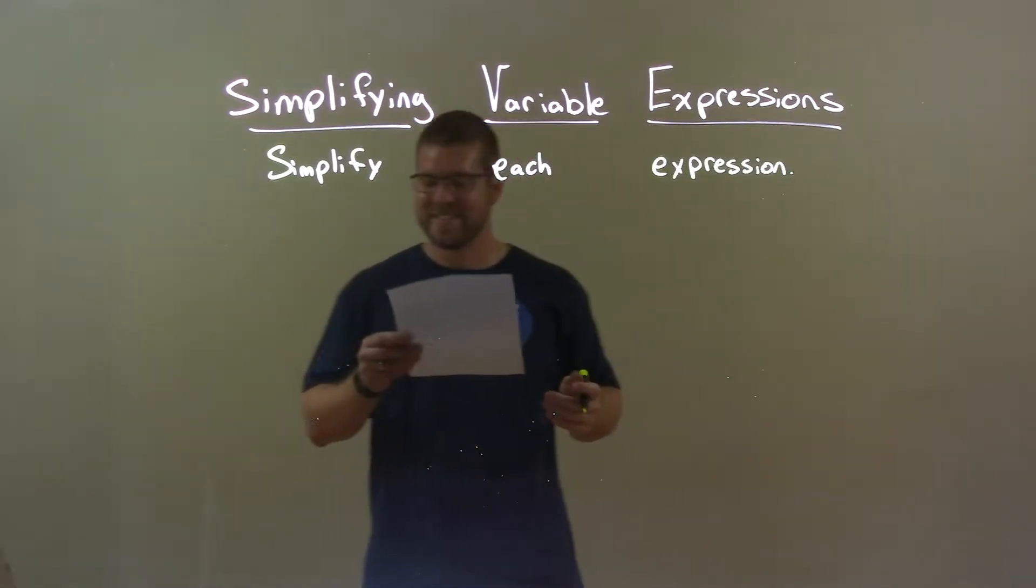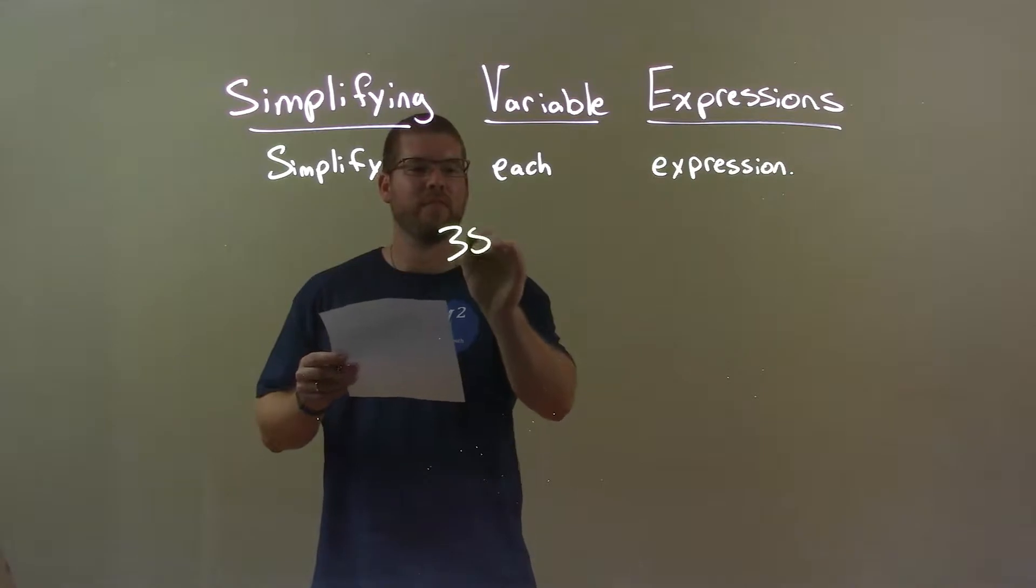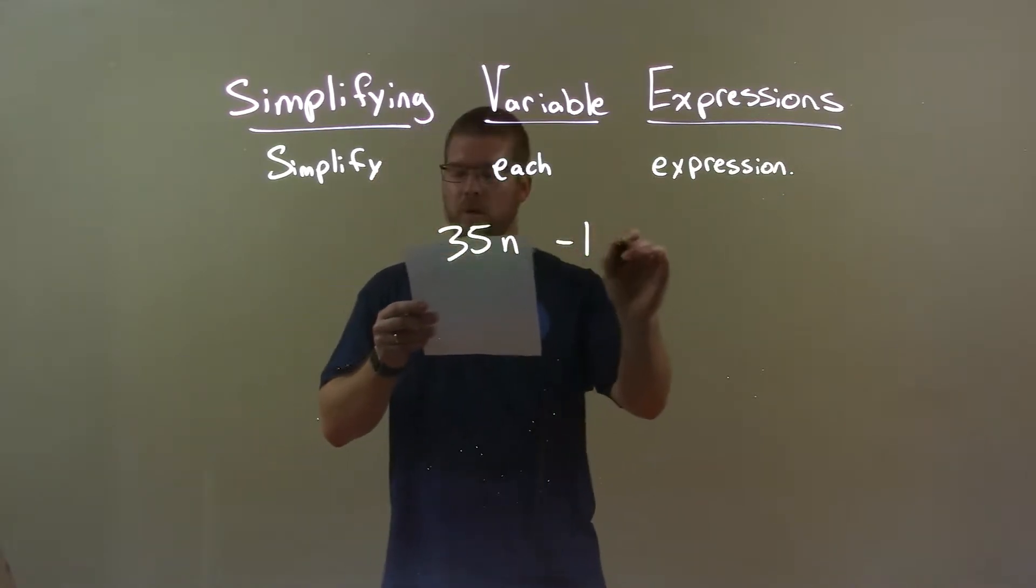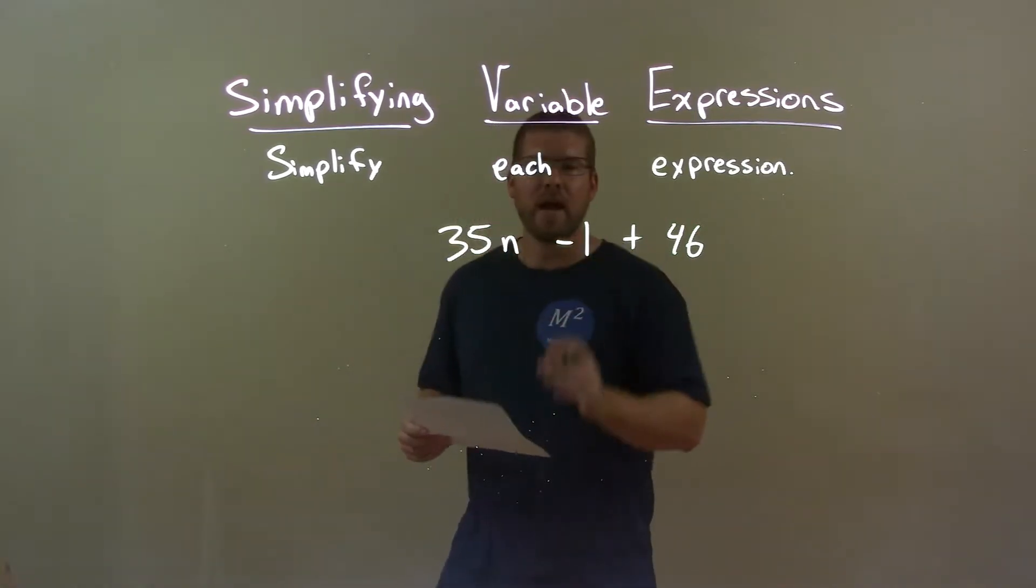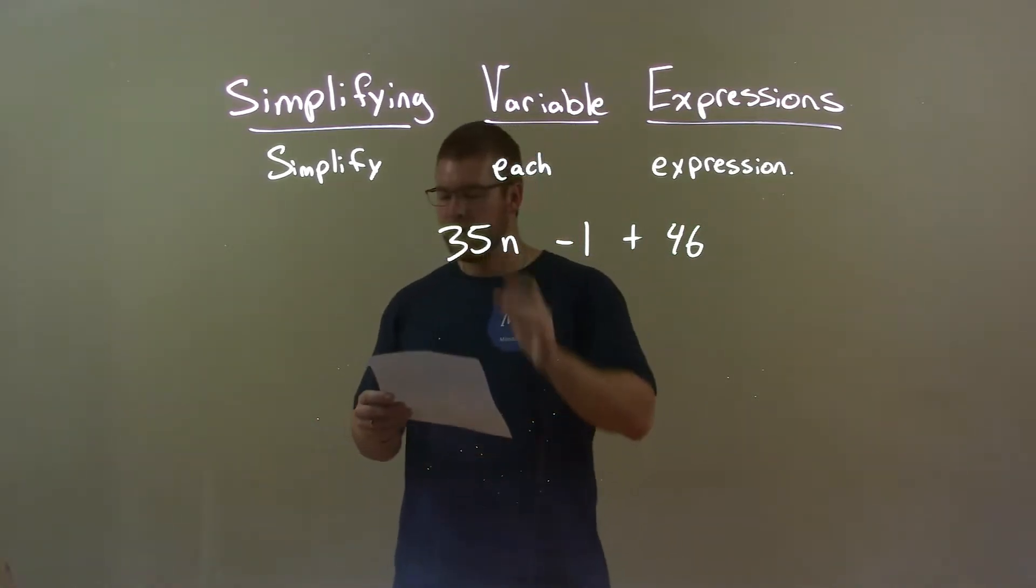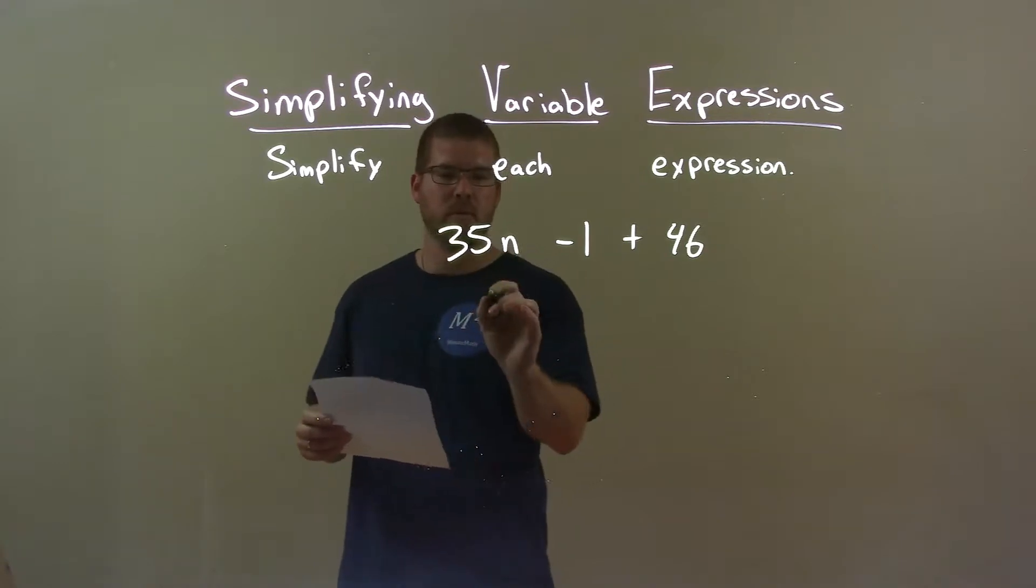So if I was given this expression, 35n minus 1 plus 46, well, here I can only combine my like terms. 35n is a term on its own, don't need to worry about it.